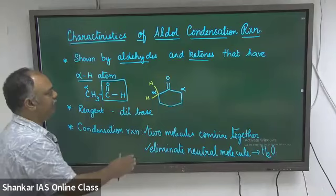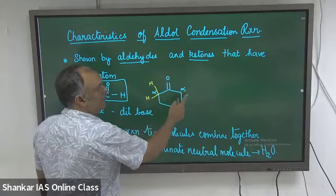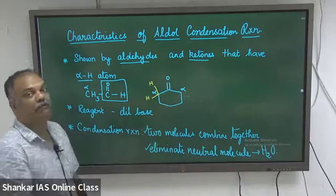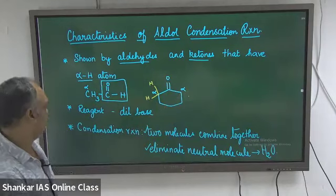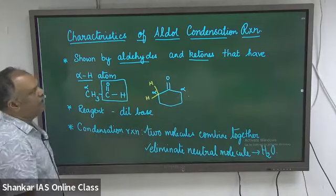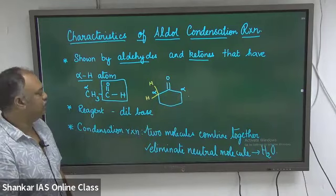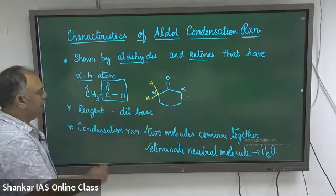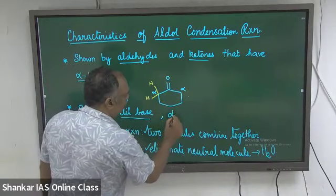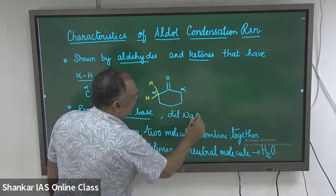Similarly, for cyclohexanone, there are two alpha carbons, and accordingly you will have four alpha hydrogens. The reagent used for aldol condensation is a dilute base such as dilute NaOH or dilute KOH.